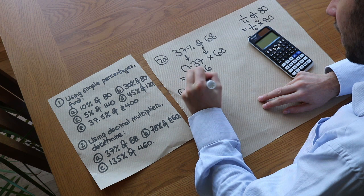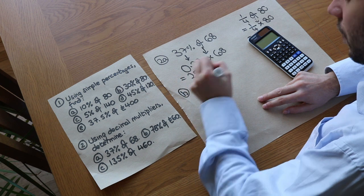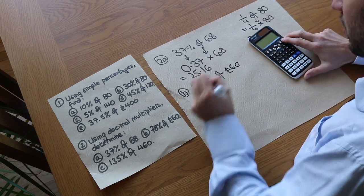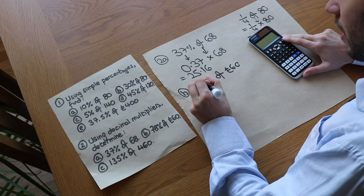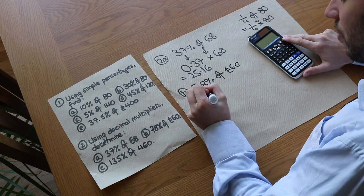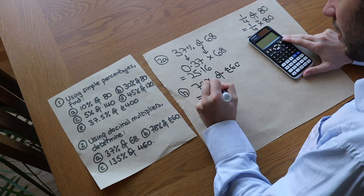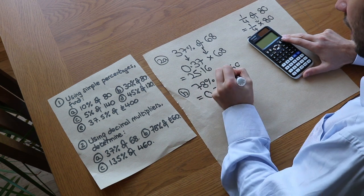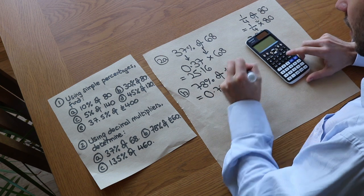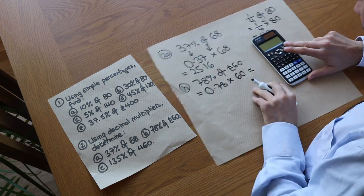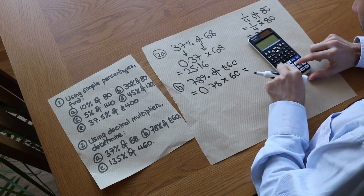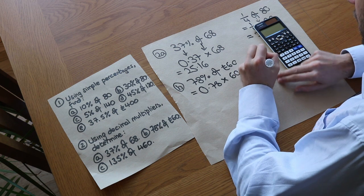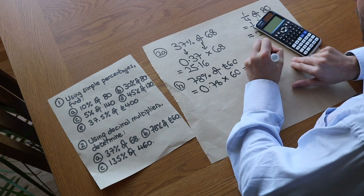For 78% of £60: convert to a decimal, which is 0.78, then multiply by 60. That gives us 46.8, therefore £46.80. Make sure you put that zero on the end.